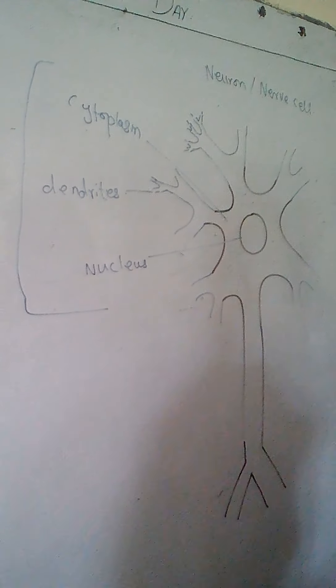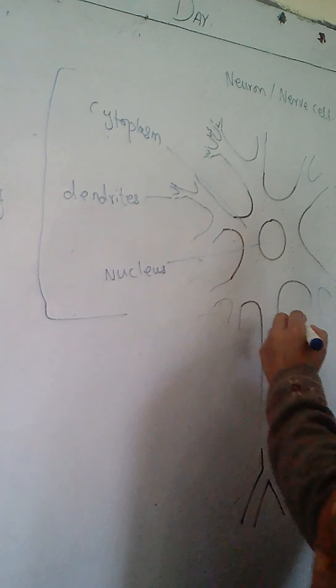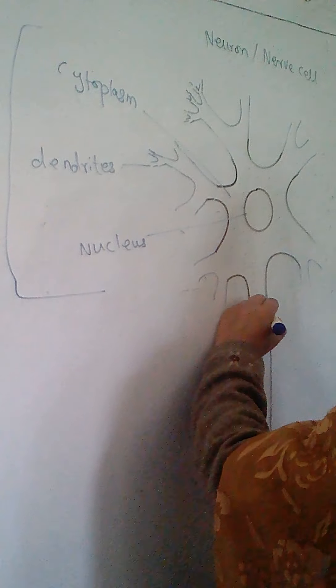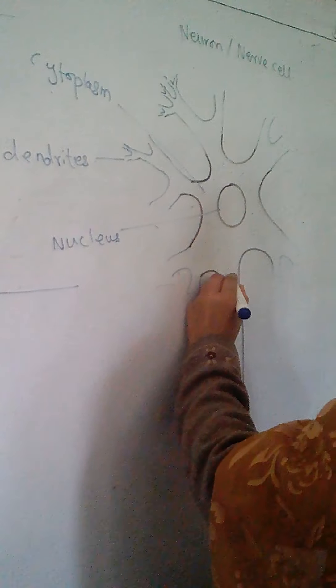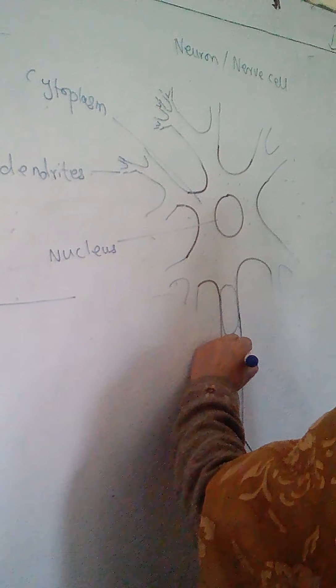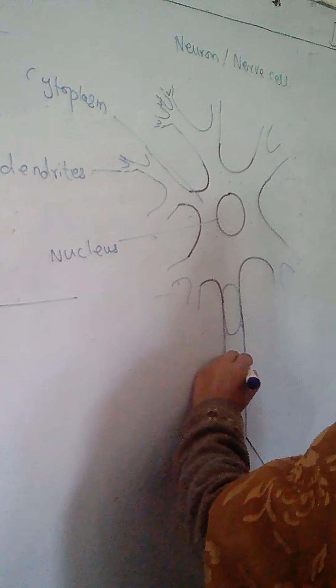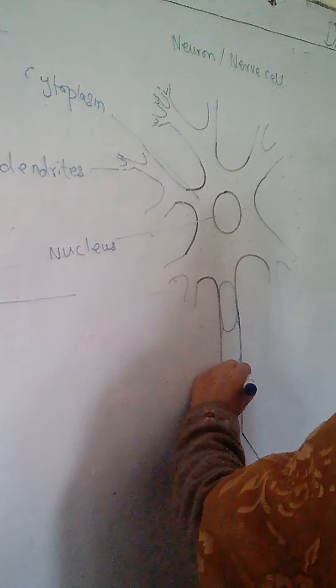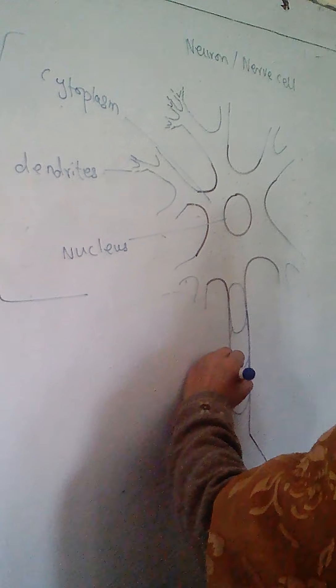Then there is a structure called axon. Axon is long because it will have to transmit the impulses.